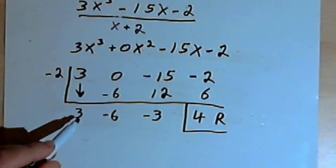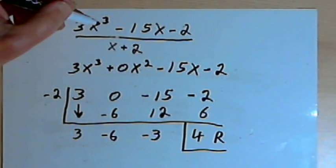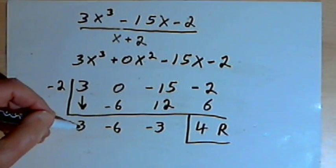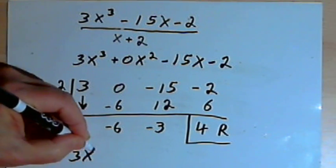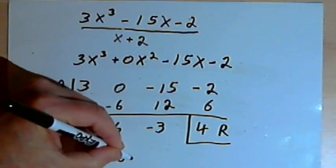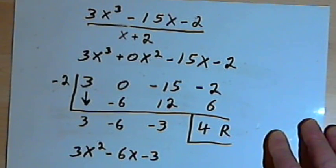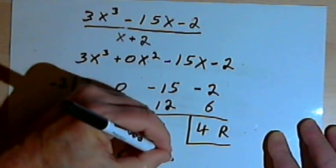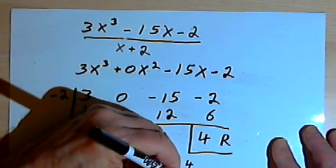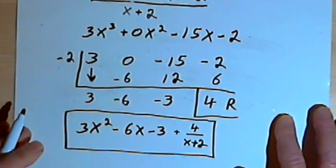Now we'll take what we've got here, 3, negative 6, negative 3, and convert that back into a polynomial. I started with x to the third power, which means that what I'm going to have as my answer is going to begin with x to the second power. So that's going to be 3x squared minus, the next power of x would be just x, minus 6x minus 3. And if I want to show this the way I would do it with algebraic long division, I could take that remainder and write this as plus 4 over my original divisor, x plus 2. And there's your answer.